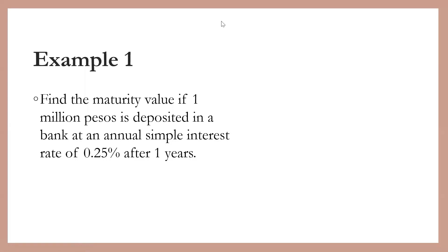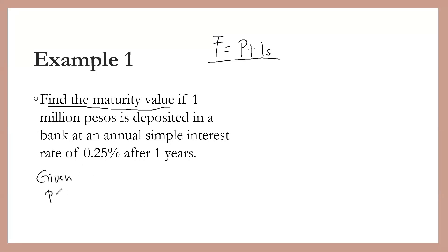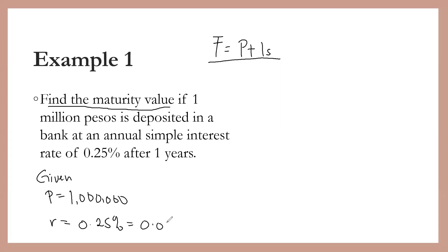We are asked to solve for the maturity value. I'm going to solve this problem using the two formulas so you can see both approaches. Let's start by identifying the given values. The principal is 1 million pesos. The simple interest rate is 0.25%, or 0.0025 in decimal. The time is 1 year.